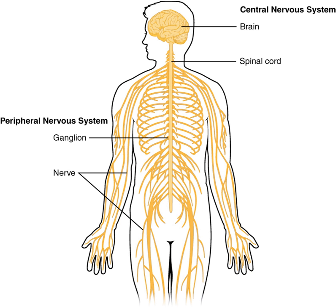Microscopically, there are differences between the neurons and tissue of the CNS and the peripheral nervous system. The CNS is divided into white and gray matter, which can also be seen macroscopically on brain tissue. The white matter consists of axons and oligodendrocytes, while the gray matter consists of neurons and unmyelinated fibers.